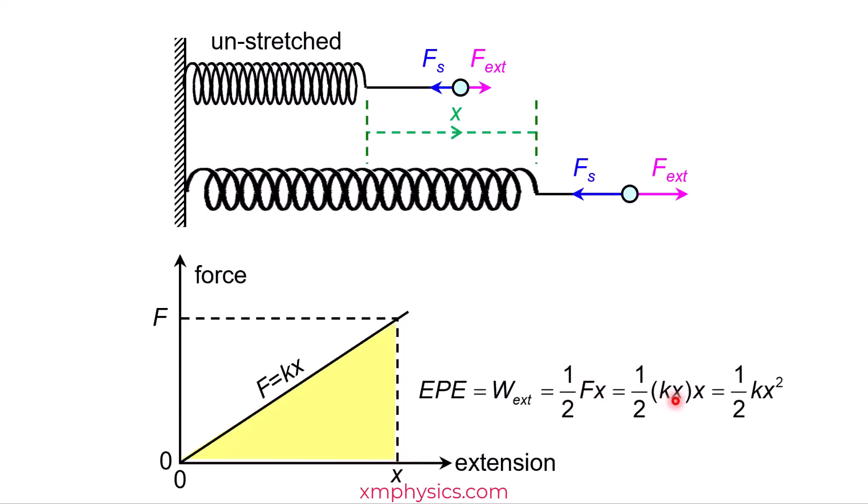F, of course, can be written as KX. So we've got the formula here, half KX squared. Actually, you are A-level students, so actually you can just integrate F equals to KX to get half KX squared.